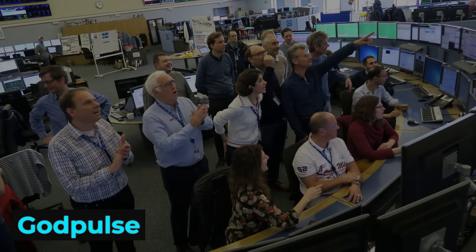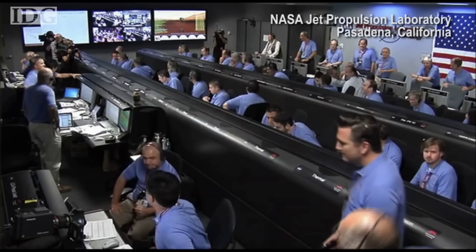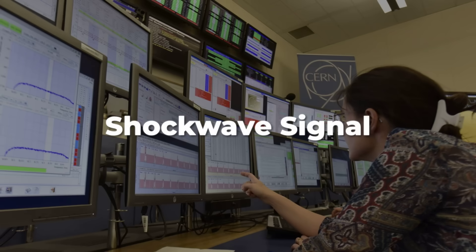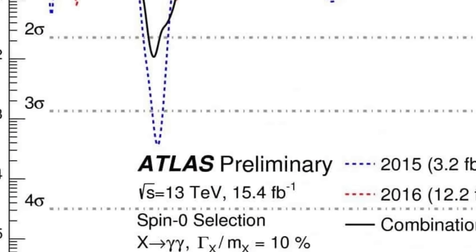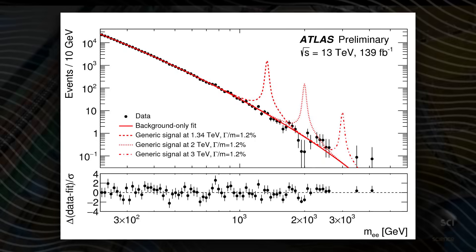Within hours, the data packet earned a nickname: the God Pulse. Even the most seasoned researchers stared at the readouts in disbelief. This wasn't a statistical blip or calibration error. The anomaly cut straight across the standard model's expectations, registering at energies where theory says the universe should be silent.